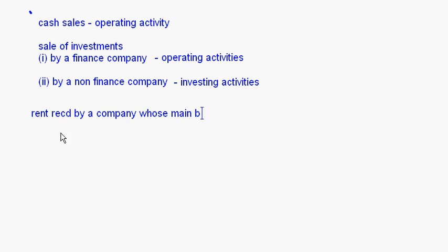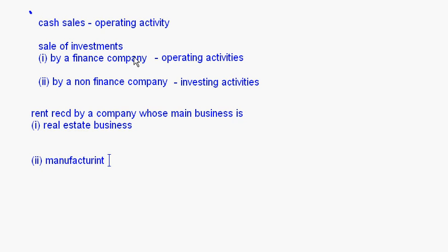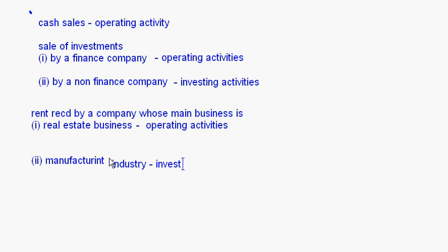Similarly, rent received by a company whose main line of business is real estate is an operating activity because they receive rent from buildings they have constructed. If it is a manufacturing business, rent received will be an investing activity, since they purchased the building as an investment and are getting rent from it.